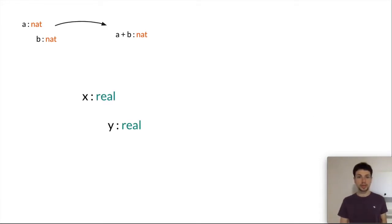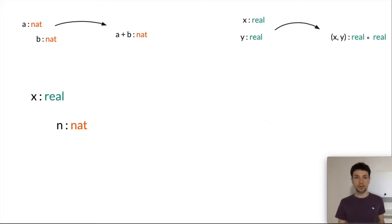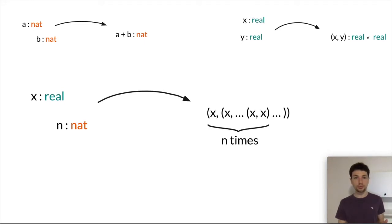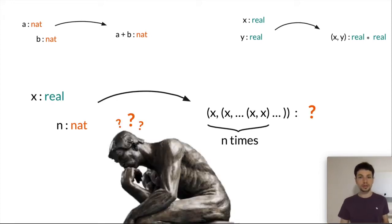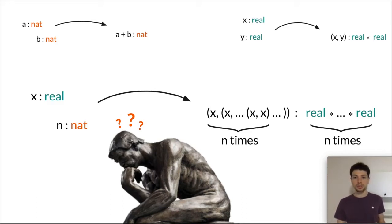An example of something we cannot do in simple type theory would be to define a tuple of size n where each of the components is equal to x. Why? Because think of the type we would have to assign to this term. It would be the type real × real, n times. This is an example of a dependent type, because the type depends on a term n, so it breaks the principal distinction between terms and types.